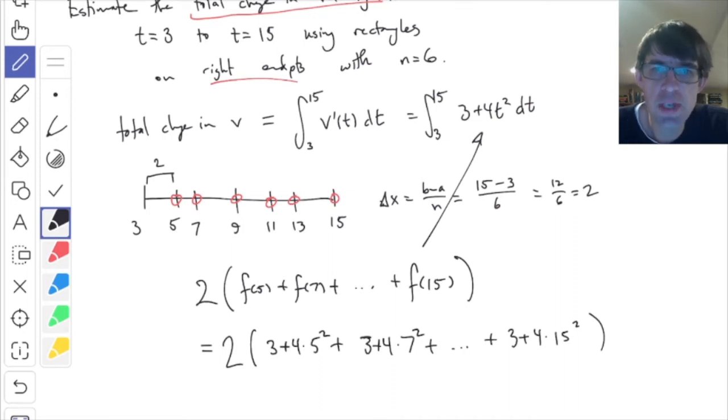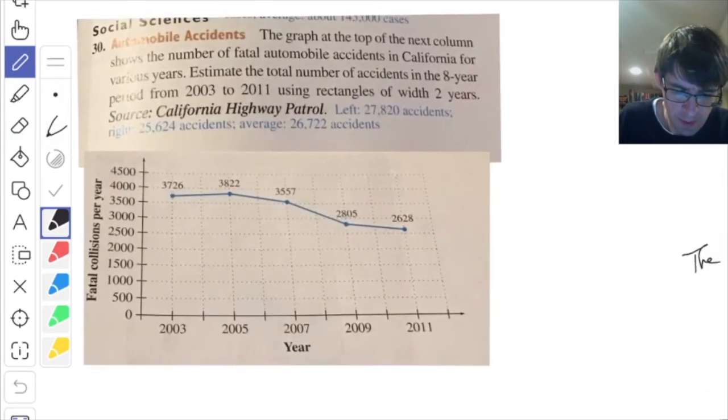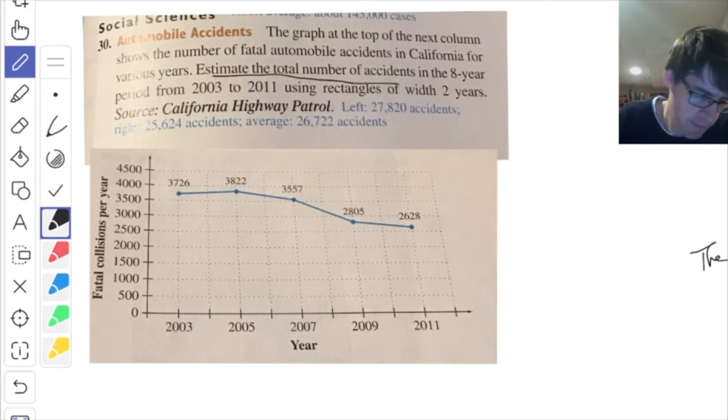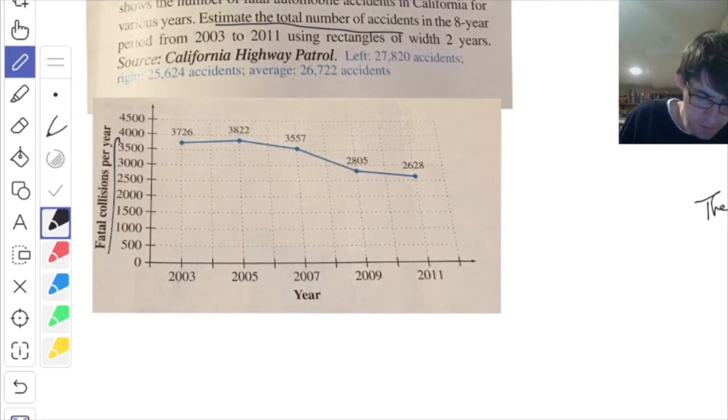This is how we do the total change. This one is where you were just given a formula for something. The ones on the homework from this section, mostly they don't give you an equation. They give you either a graph or just a list of function values. I copied one from my book. This is a word problem about automobile accidents. The graph shows the number of fatal automobile accidents in California for various years. Estimate the total number of accidents.